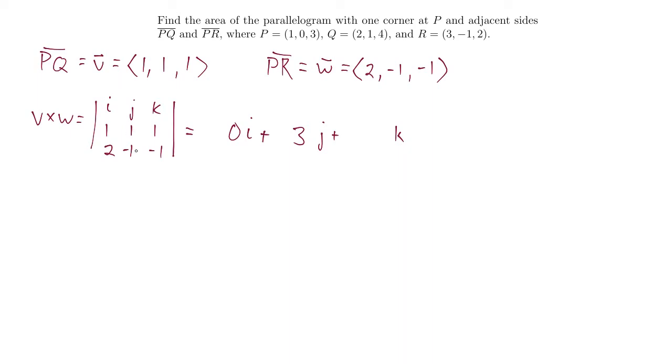And finally for K, I look at the 1, 1, 2, negative 1 square right here. I do 1 times negative 1, that's negative 1. 1 times 2 is 2, and I do negative 1 minus 2, that's negative 3. So that's the vector that corresponds, that is the cross product vector. If I write it in component form, that would be 0, 3, negative 3.